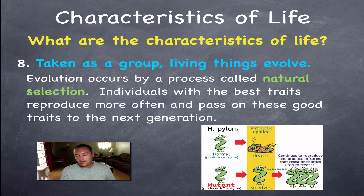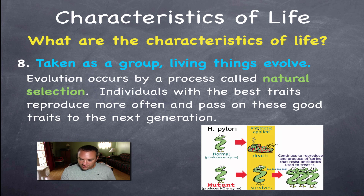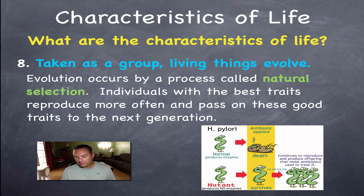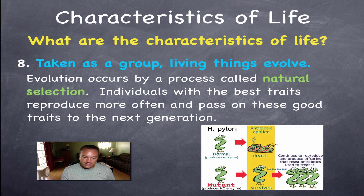We can see evolution in bacteria almost before our eyes due to the overuse of antibiotics. In a population of H. pylori — a bacterium that leads to stomach ulcers — most are normal, but occasionally a mutant has a gene giving resistance to antibiotics. When antibiotics are applied, the normal ones die while the resistant mutant survives and reproduces, until the entire population is antibiotic-resistant. That's evolution in a nutshell: change over time through natural selection.